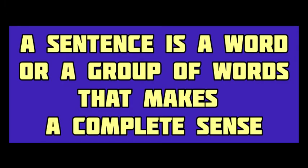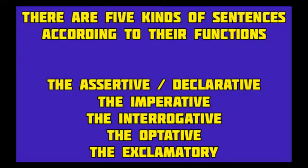A sentence is a word or a group of words that makes a complete sense or expresses a complete idea. In English, there are five kinds of sentences according to their different functions. These five kinds of sentences are the assertive or declarative sentence, the imperative sentence, the interrogative sentence, the optative sentence, and the exclamatory sentence.